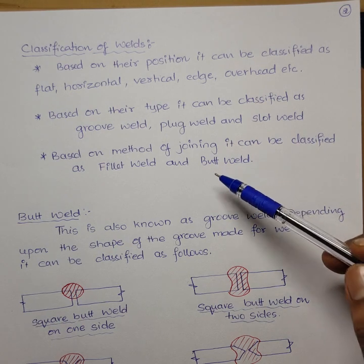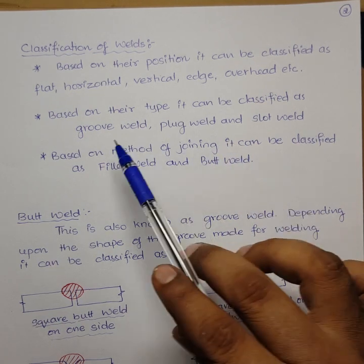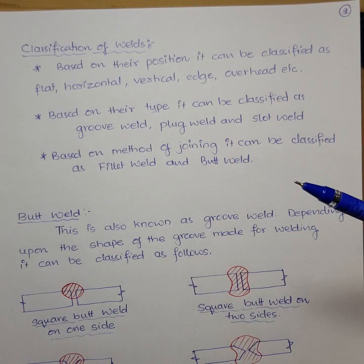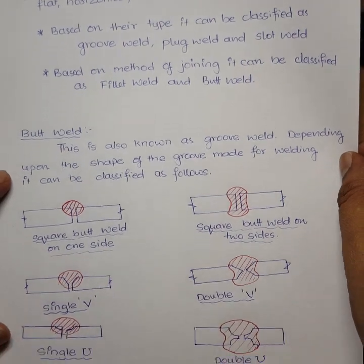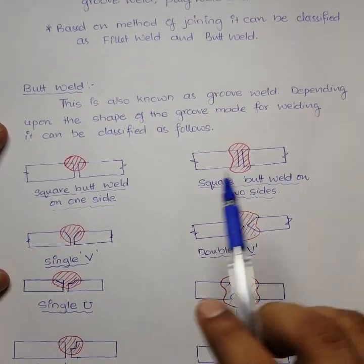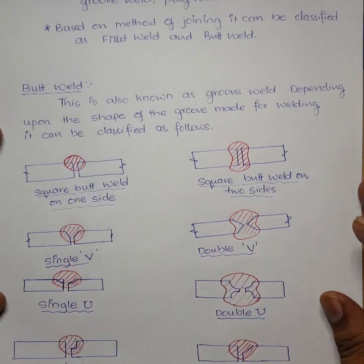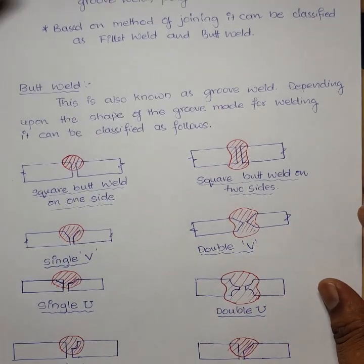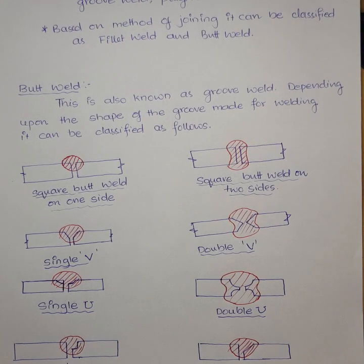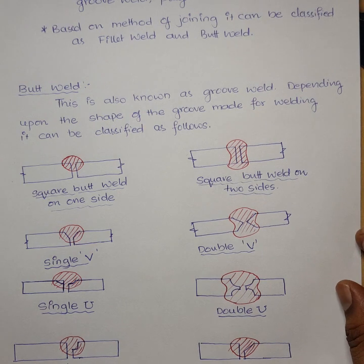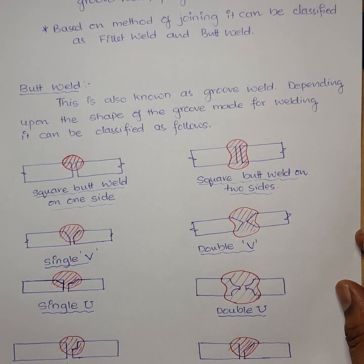First we will deal with the butt weld. A butt weld is also known as a groove weld — we make a small groove in order to join two metals. Depending upon the shape of the groove made for welding, the butt weld can be classified as follows.